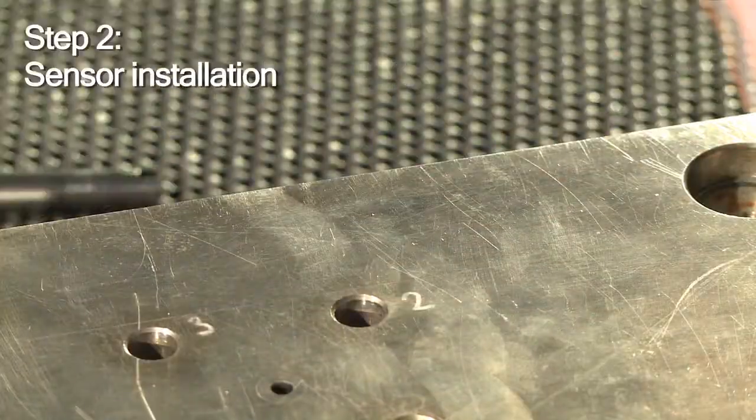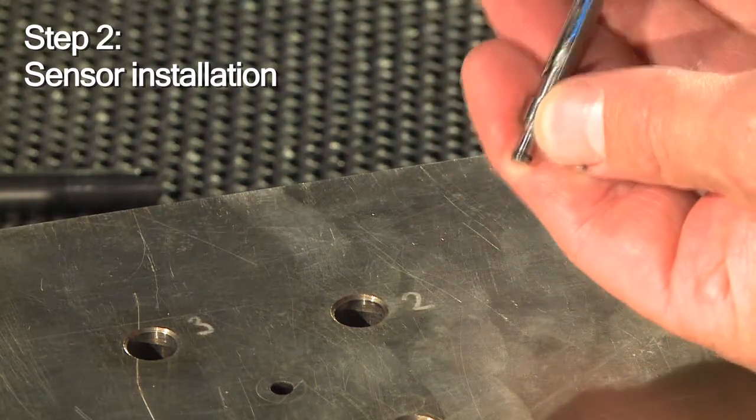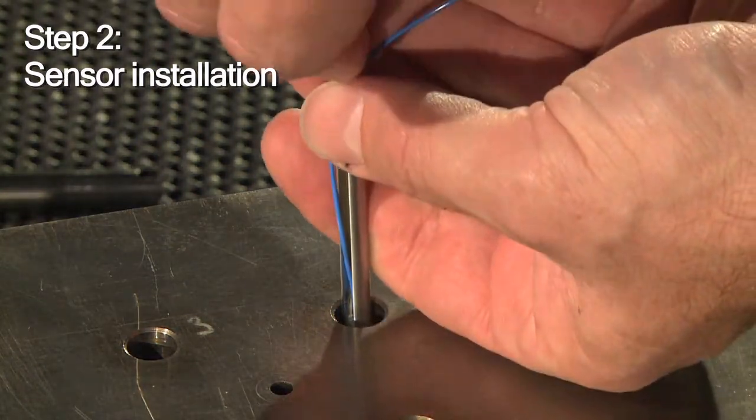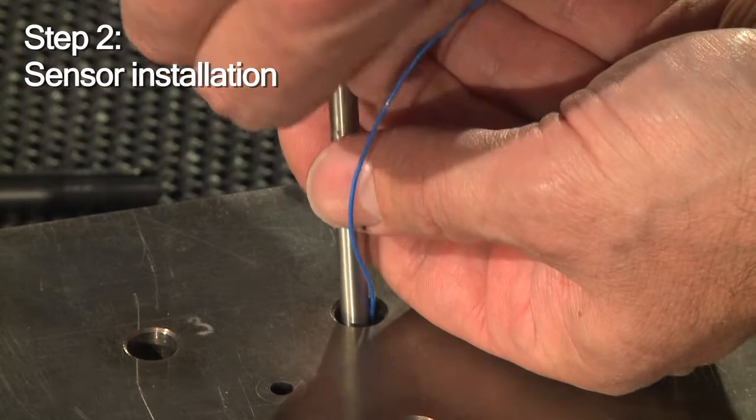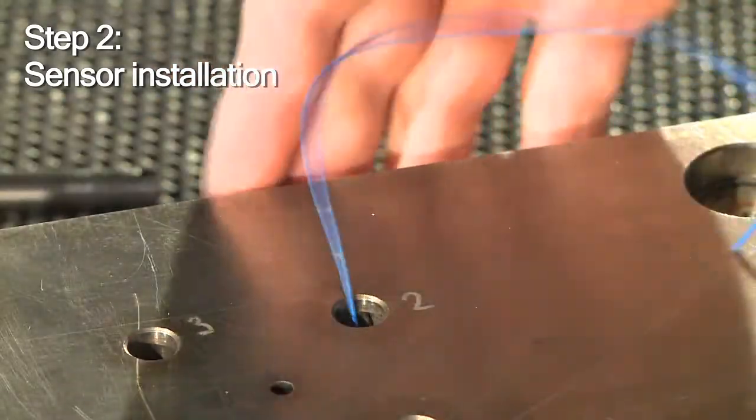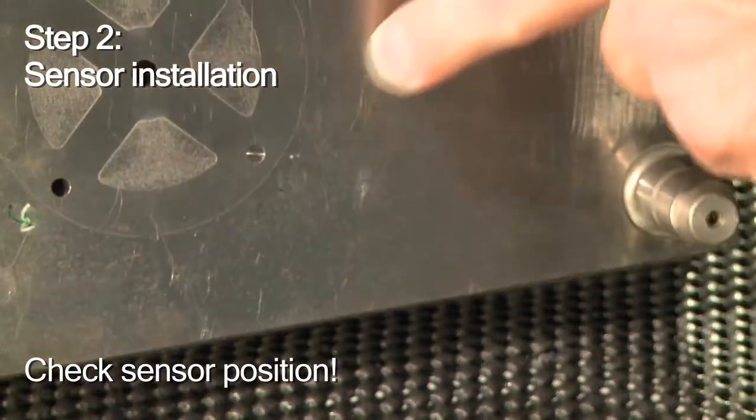So you move on to the actual sensor installation. Kistler provides special insertion tools for all types of sensors. Make sure the sensor fits exactly.